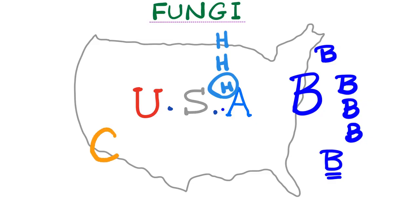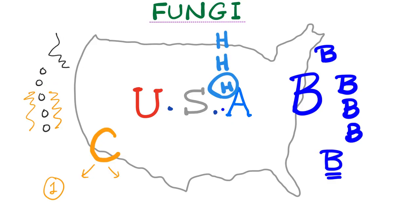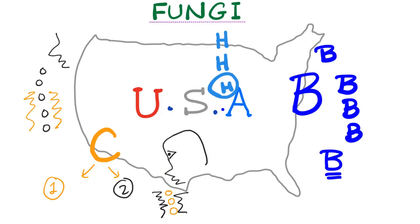Third, we have coccidioidomycosis. It is found in the southwest United States, such as California and Arizona. There are two classic exam scenarios. Scenario one: an earthquake in California creates defects in the earth's surface, releasing spores of coccidioidomycosis into the air — hospitals become overwhelmed with cases. Scenario two: an archaeologist digging through soil in Arizona inhales coccidioidomycosis spores and develops the infection.